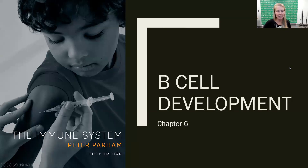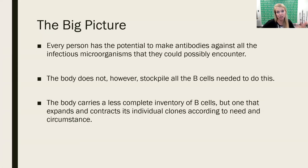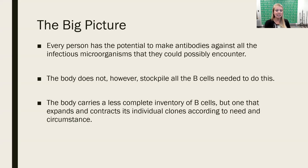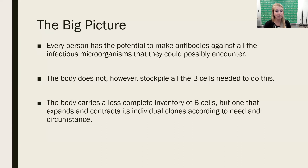Let's take a few minutes to talk about the big picture ideas from this chapter. People have the capacity or the potential to make a limitless number of antibodies. There is a limit, but the number is so high that it really is limitless. That means they could potentially make an antibody with a specificity for any possible microorganism or invader they could possibly encounter at any point in their lives.